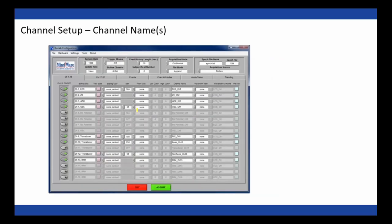There are a couple of ways channels are referred to in the Mindware system. The channel type, shown in the BionX slot column, is not modifiable — it's set by the system and gives a general idea of what that channel can be used for. For example, with an impedance cardiograph module, channel 1 is always ECG, channels 2 and 3 are always impedance, and channel 4 is always skin conductance. Other channel types like biopotential are generic, and transducer channels don't specify what kind of transducer is plugged in.